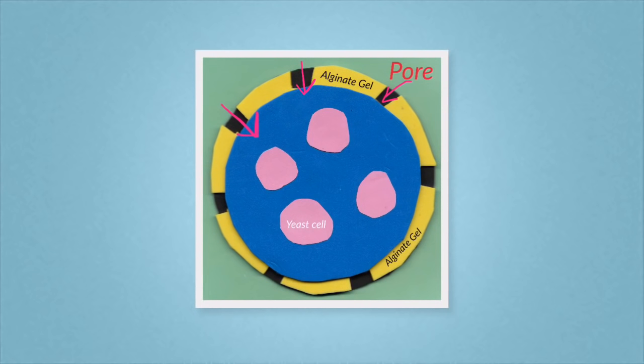Here's a rough diagram of one of those beads. So you have the alginate gel, you have the pores, and you have the yeast cells inside.